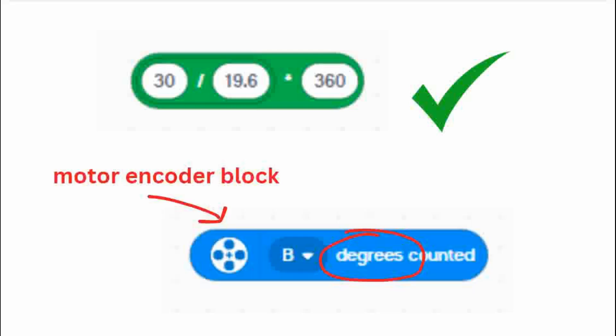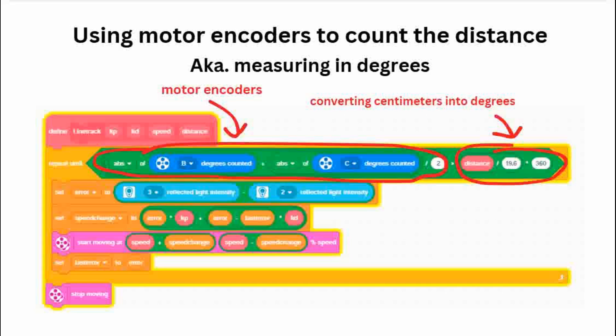But converting centimeters to degrees is also very important. This is mainly because EV3 Classroom motor encoder blocks always count in degrees. So if you want to create a more advanced code, such as line following for a distance, then you need to use motor encoders to count the distance, which again measures in degrees.